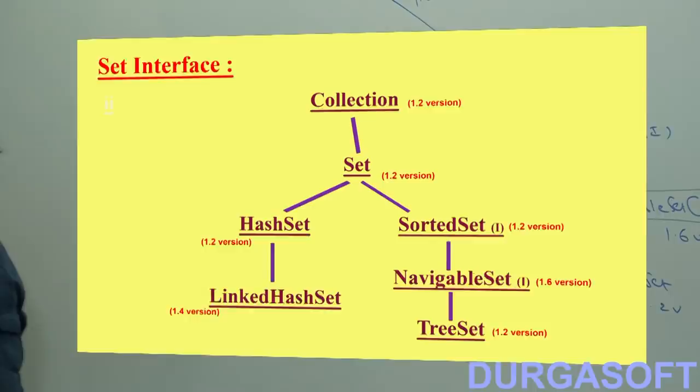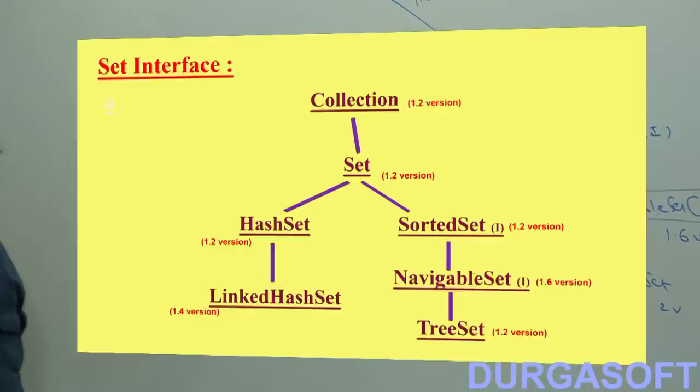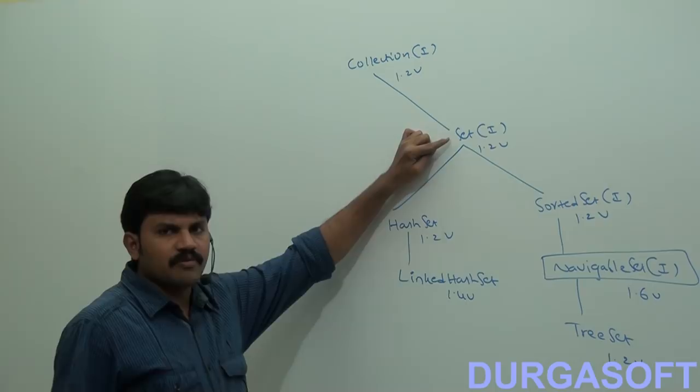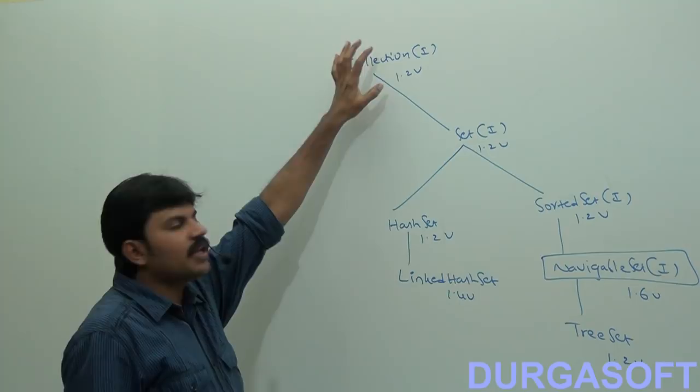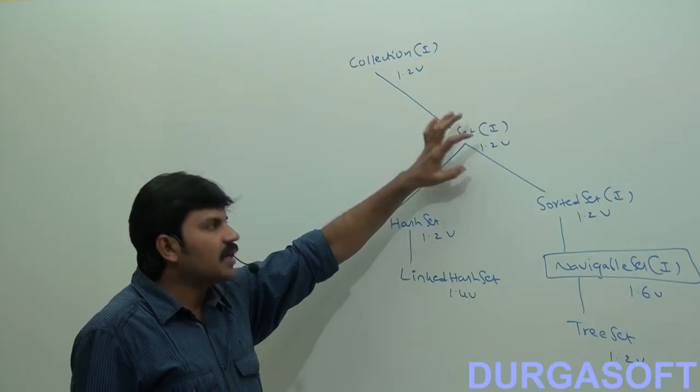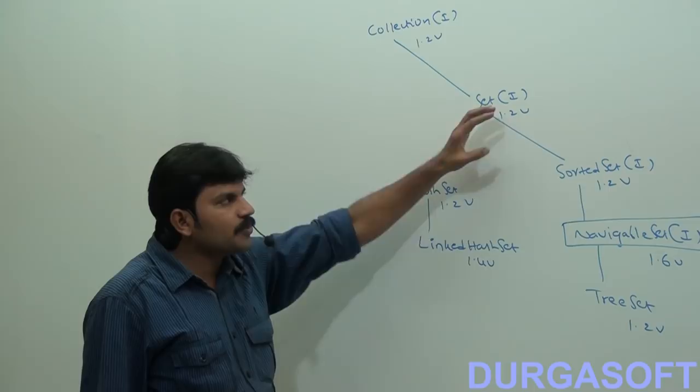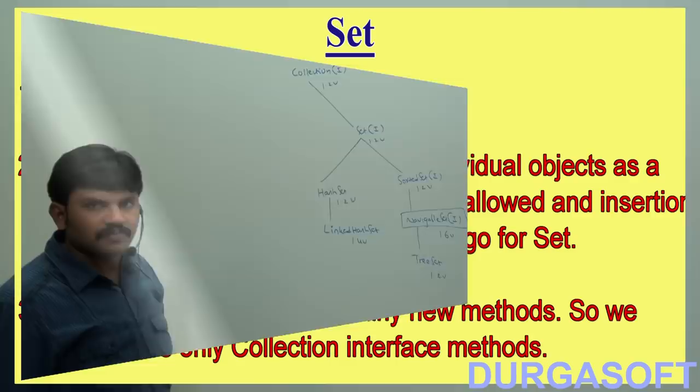One important point about Set: the Set interface does not contain any new methods. Whatever methods are available are defined in Collection — we have to use those methods only. Set does not define any new methods; the existing methods are implemented with Set-style behavior.